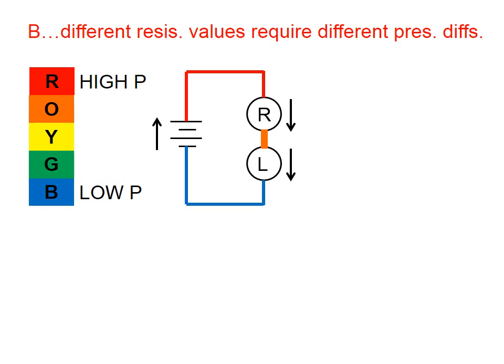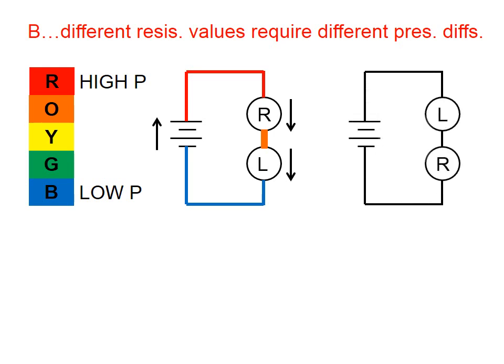Those pressure differences have to be different because a round bulb has less resistance than a long bulb. To get the same current through a round bulb, you don't have to push very hard — it's a small pressure difference. To get that same current through a long bulb, you have to push much, much harder. The pressure difference from orange to blue is much larger.